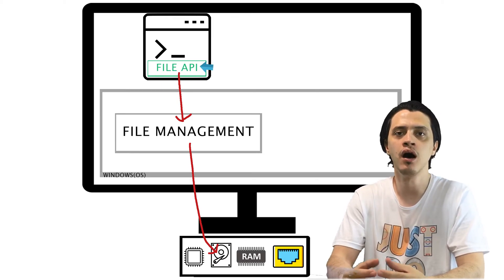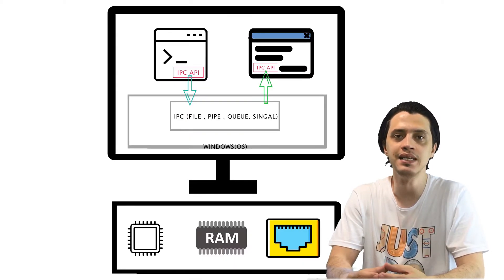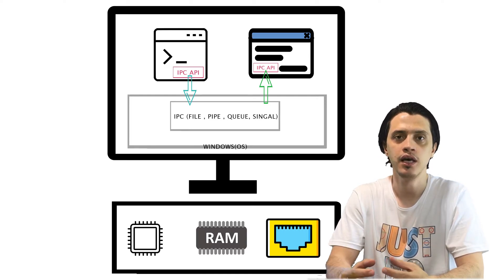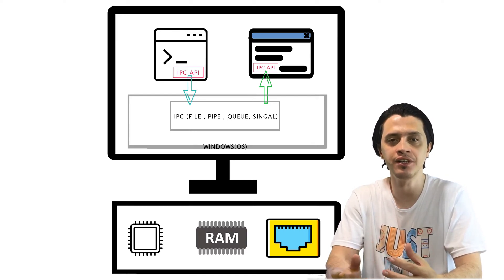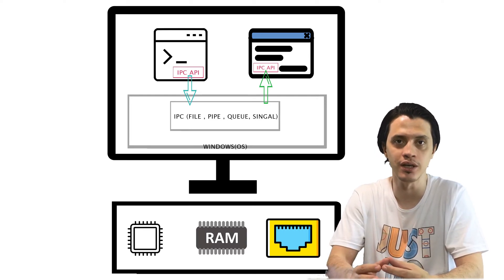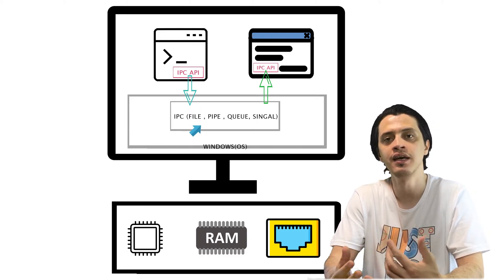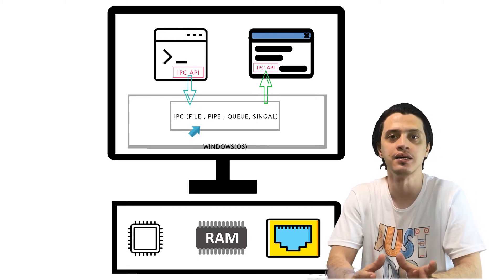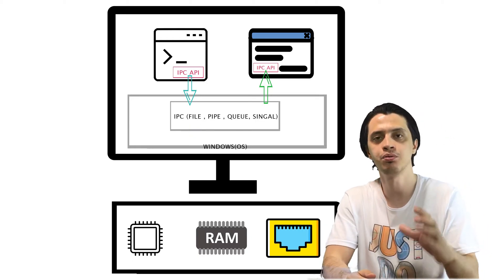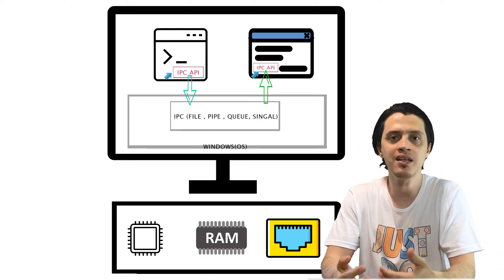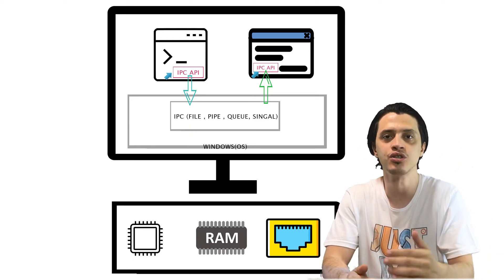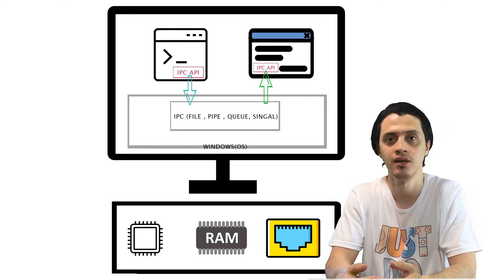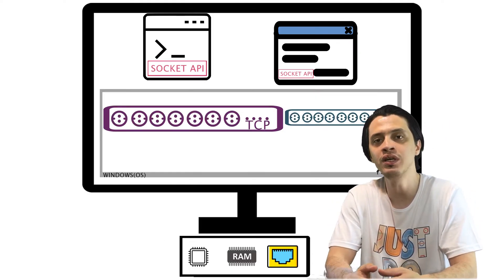Now, with other capabilities like IPC and windowing and graphics, each operating system has a different implementation, and they provide different terminologies and different APIs. And on top of that, the programming languages provide some abstractions over those APIs and change the terminologies.